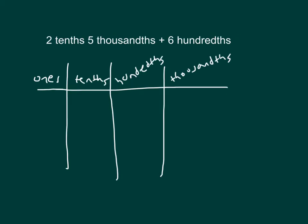And in this case, we did not need to bundle or regroup. Here we have another problem. 2 tenths, 5 thousandths, plus 6 hundredths.